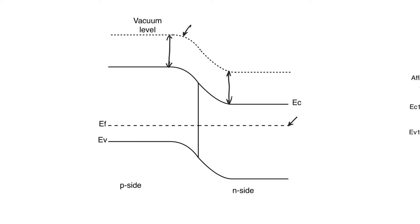The first step is to draw a flat vacuum level, and then draw the band diagram of each material in its location relative to the vacuum level, as if they are in isolation. This gives a band diagram with multiple Fermi levels, and therefore it is not an equilibrium band diagram. This is called the flat band diagram, and it is the first step in drawing the equilibrium band diagram.